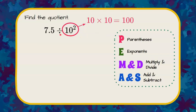So let's rewrite our numerical expression, replacing 10 squared with 100. 7.5 divided by 100. When you divide by a multiple of 10 or a power of 10, each 0 in the value represents a decimal place.